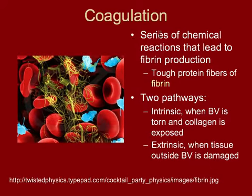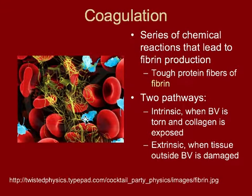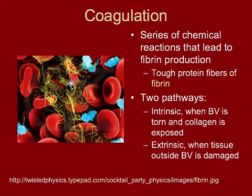The platelets release chemicals that cause a cascade of reactions, and that cascade makes the fibrinogen floating around in the plasma turn into solid fibrin. In this picture you can see red blood cells, little blue platelets, and the solid fibrin. It's like a net — very sticky — it sticks to the red blood cells and the blood vessels, and think Spider-Man-ish: it forms a net that holds back the red blood cells.